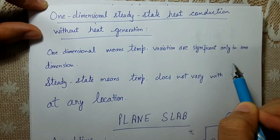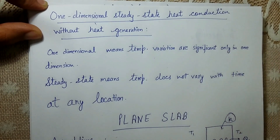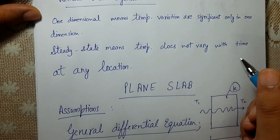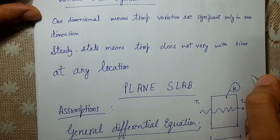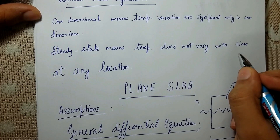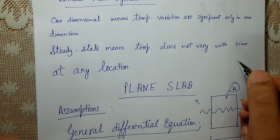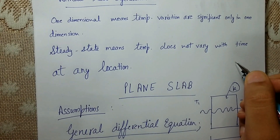One-dimensional means that temperature variations are significant only in one dimension and negligible in other dimensions. Steady state means the temperature does not vary with time at any location. This is an important point — temperature at different points within the slab will be different, but at any given point it does not change with time.